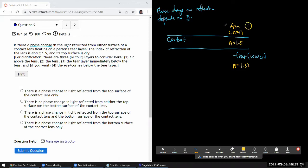Okay, so for clarification, there are three or four layers to consider here. Air, I got that. The lens, I got that. And the tear layer immediately below, I got that. What's the fourth layer? Eye or cornea. Yeah, okay. But that doesn't come into place. I think I can leave that. All right. So those are the layers.